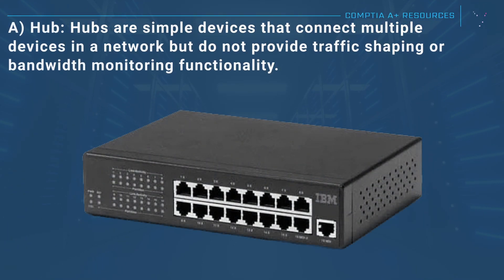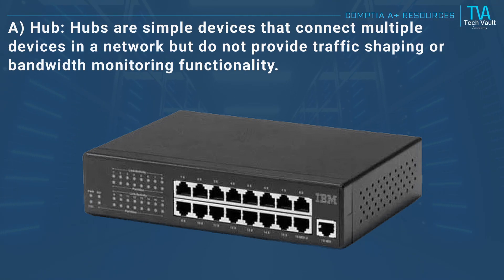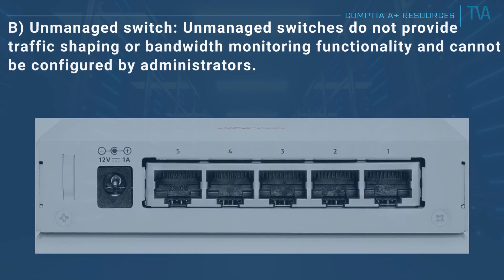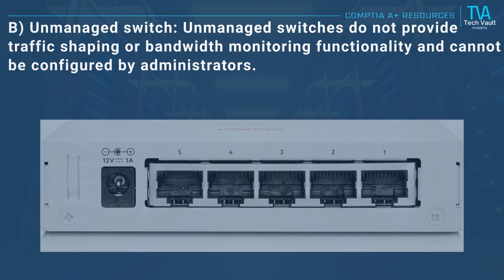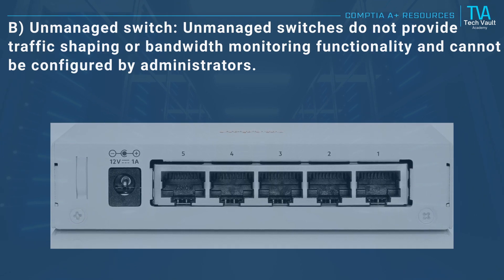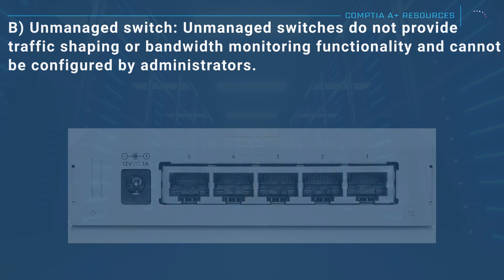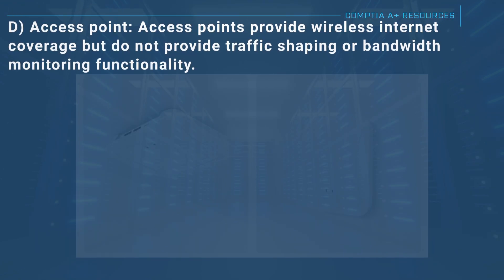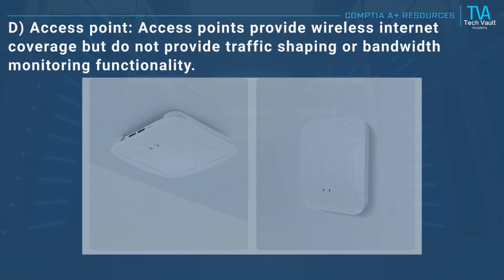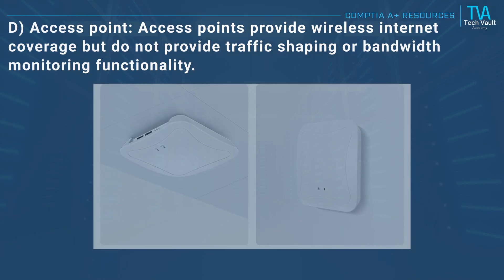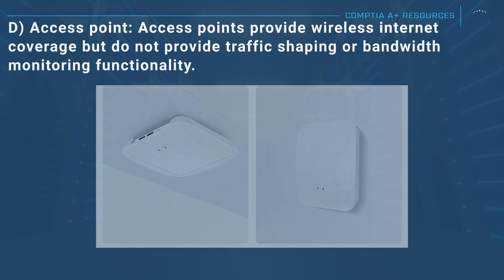A, hub: hubs are simple devices that connect multiple devices in a network but do not provide traffic shaping or bandwidth monitoring functionality. B, unmanaged switch: unmanaged switches do not provide traffic shaping or bandwidth monitoring functionality and cannot be configured by administrators. D, access point: access points provide wireless internet coverage but do not provide traffic shaping or bandwidth monitoring functionality.